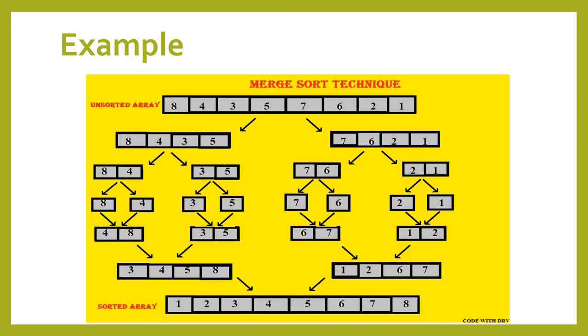So the two arrays contain 4 elements each. The first array is 8, 4, 3, 5 and the second array is 7, 6, 2, 1.